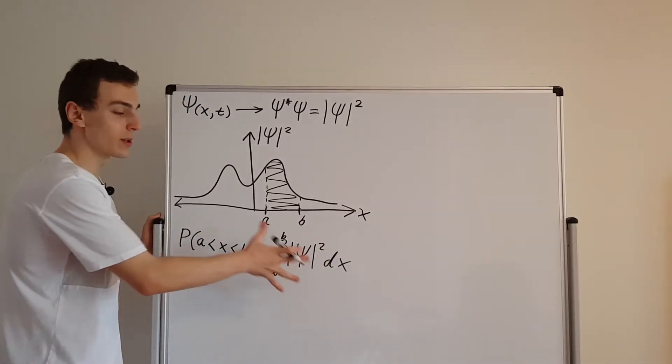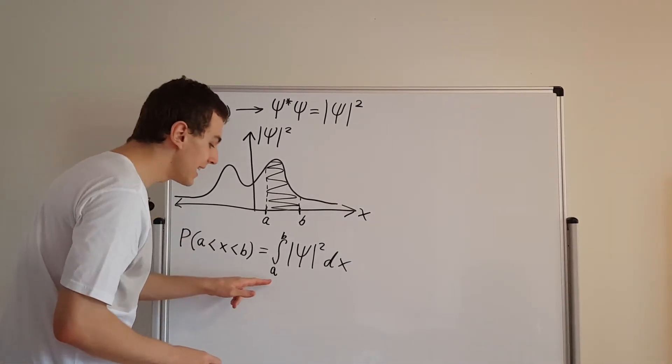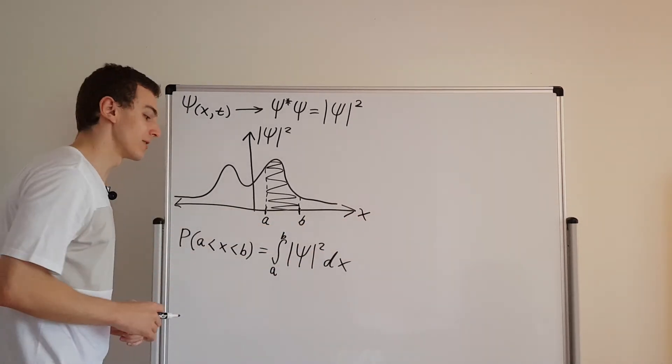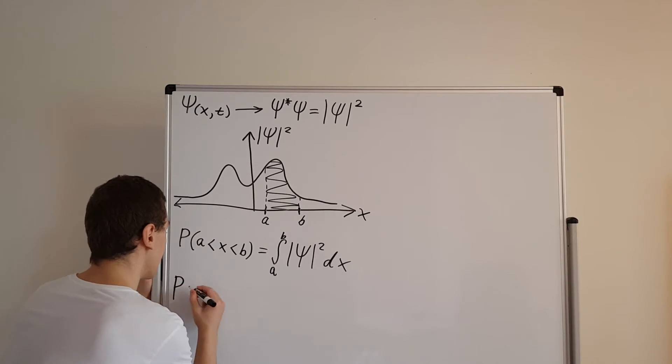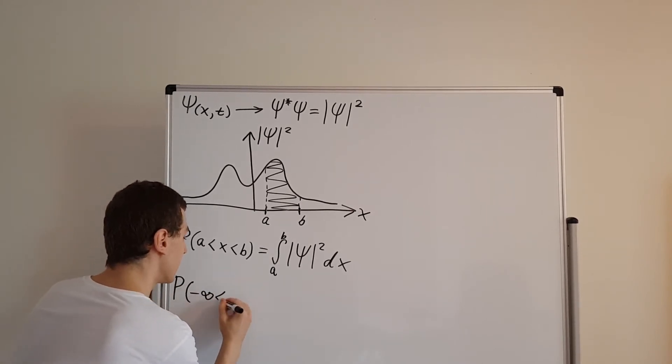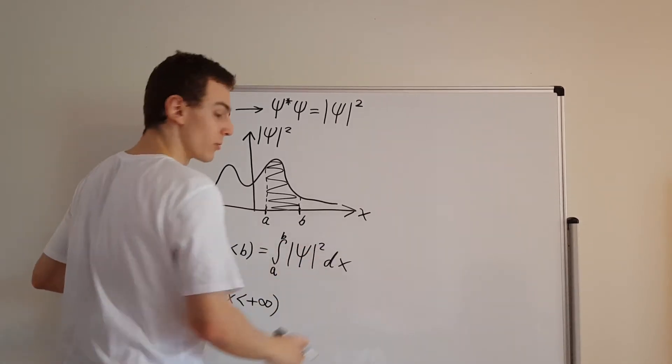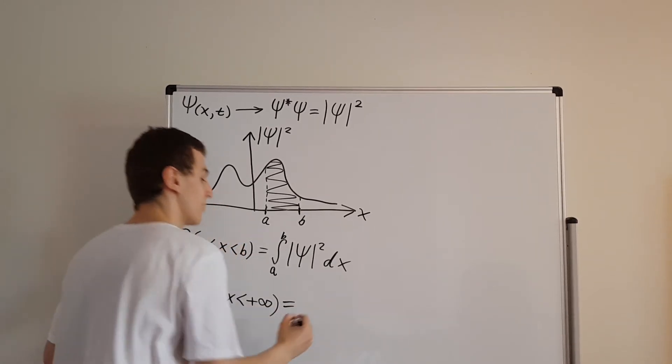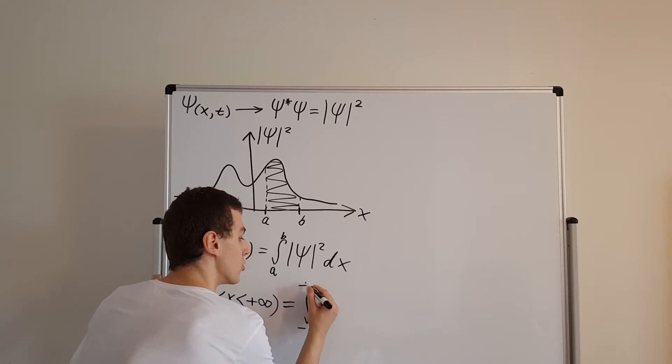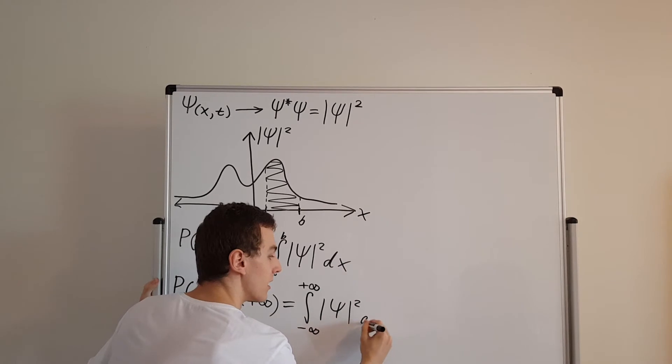This is something we've talked about in previous videos. What would happen if we take a and b and we stretch them out to minus infinity and plus infinity respectively? What's the probability that x is between minus infinity and plus infinity? Well, we can use the same reasoning, and that means we're going to have to deal with the integral from minus infinity to plus infinity of the probability density squared dx.